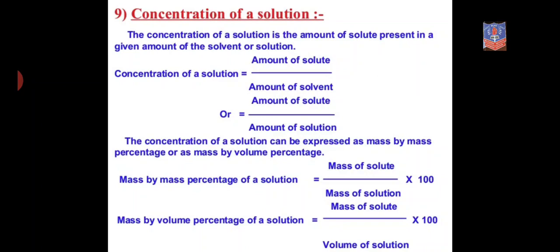There is also a third formula. If you see your NCERT textbook pages 16 and 17, three formulas are given. First is mass by mass percentage. Second is mass by volume percentage: mass of solute upon volume of solution into 100. Third is volume by volume percentage: volume of solute upon volume of solution into 100. All these methods are used to calculate the concentration of a solution depending on what is given in the question.